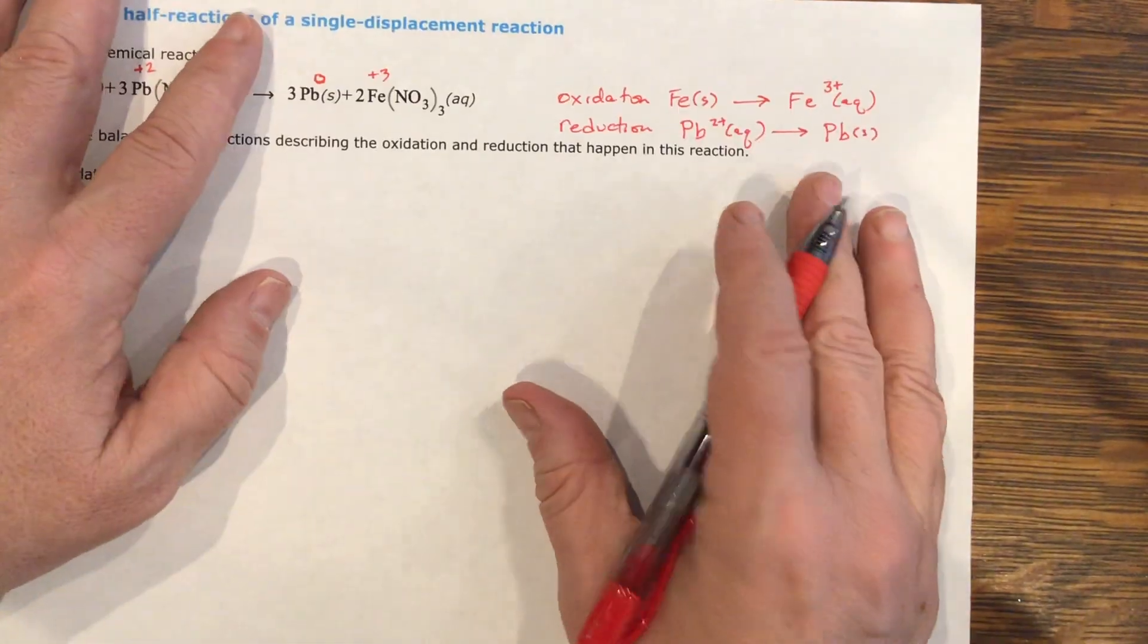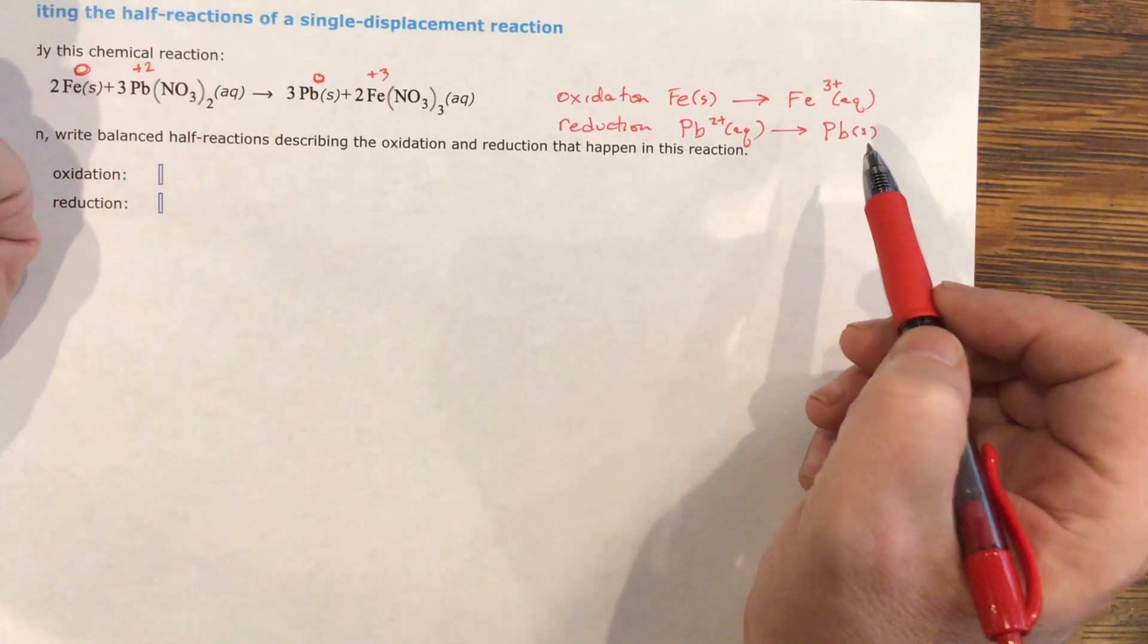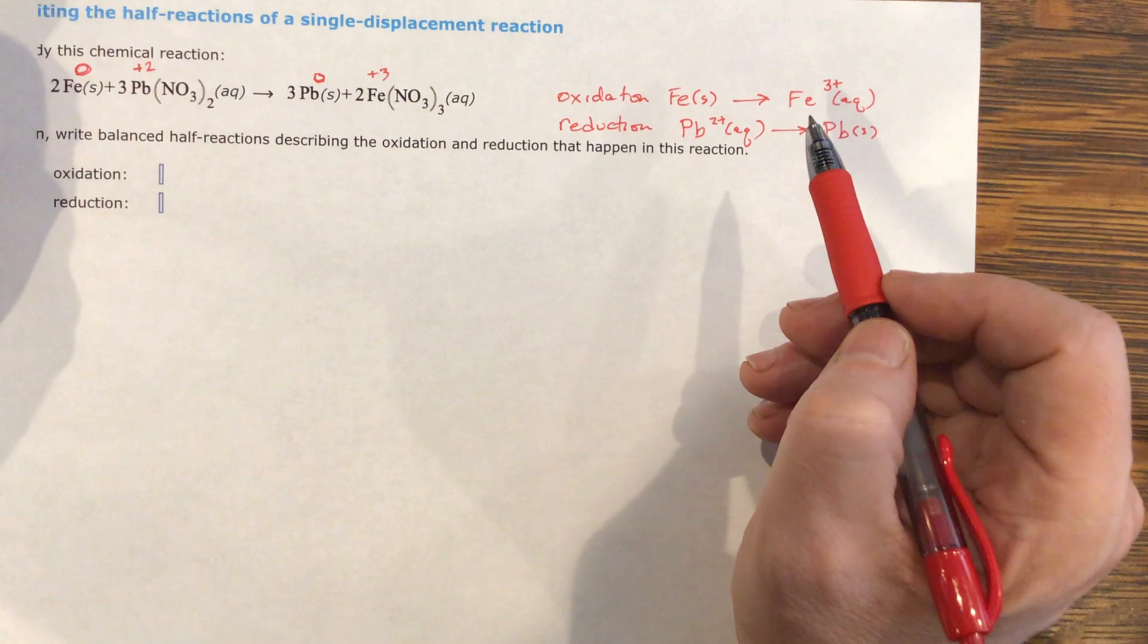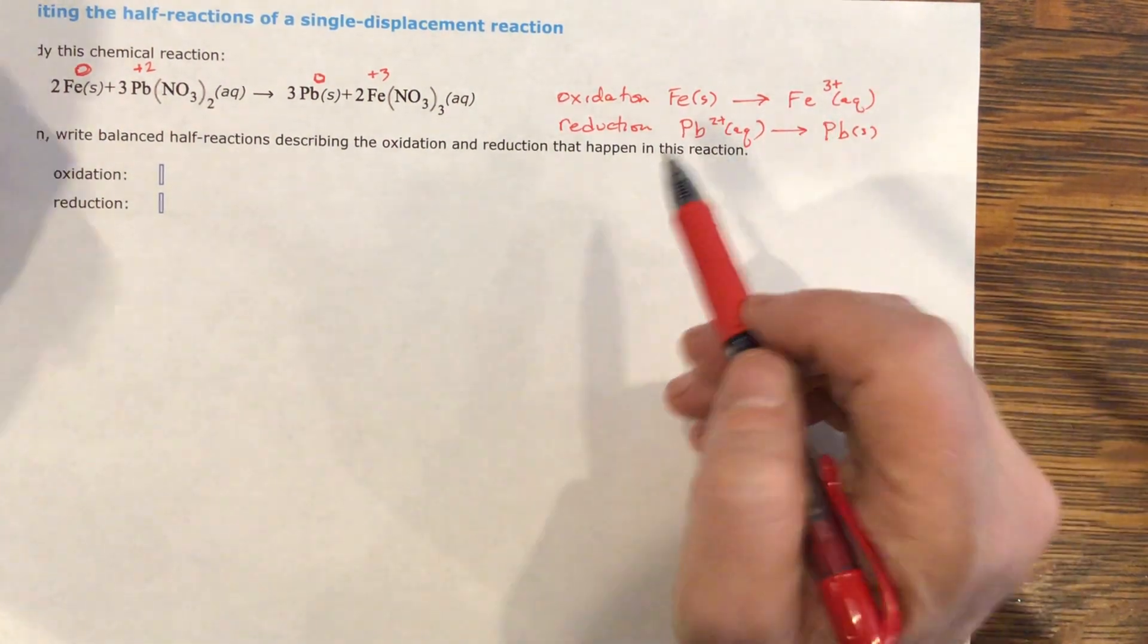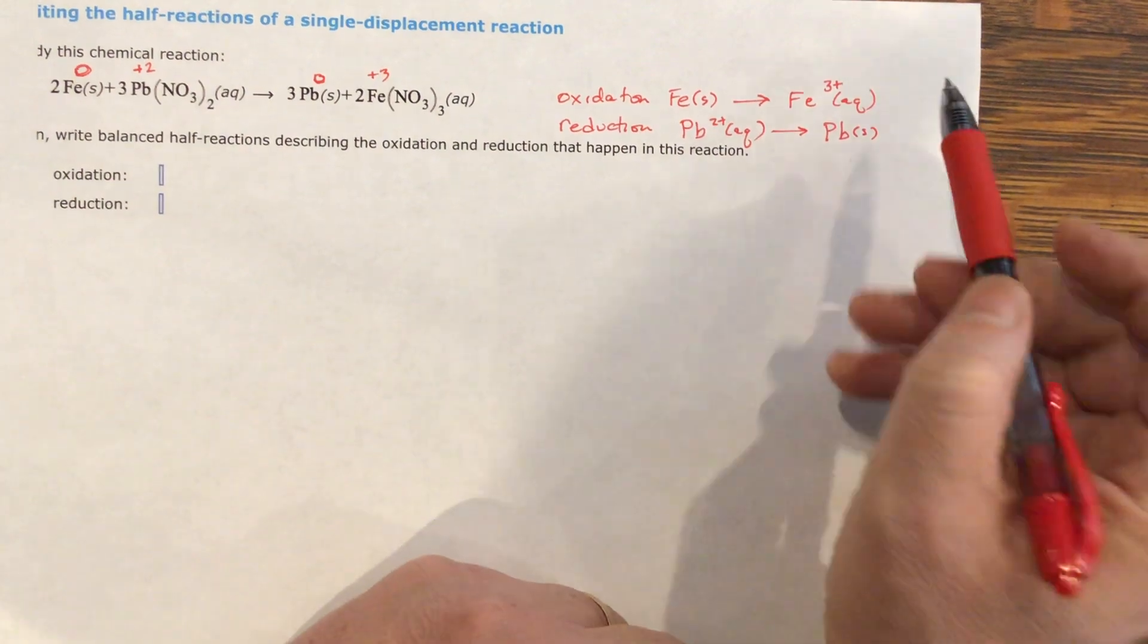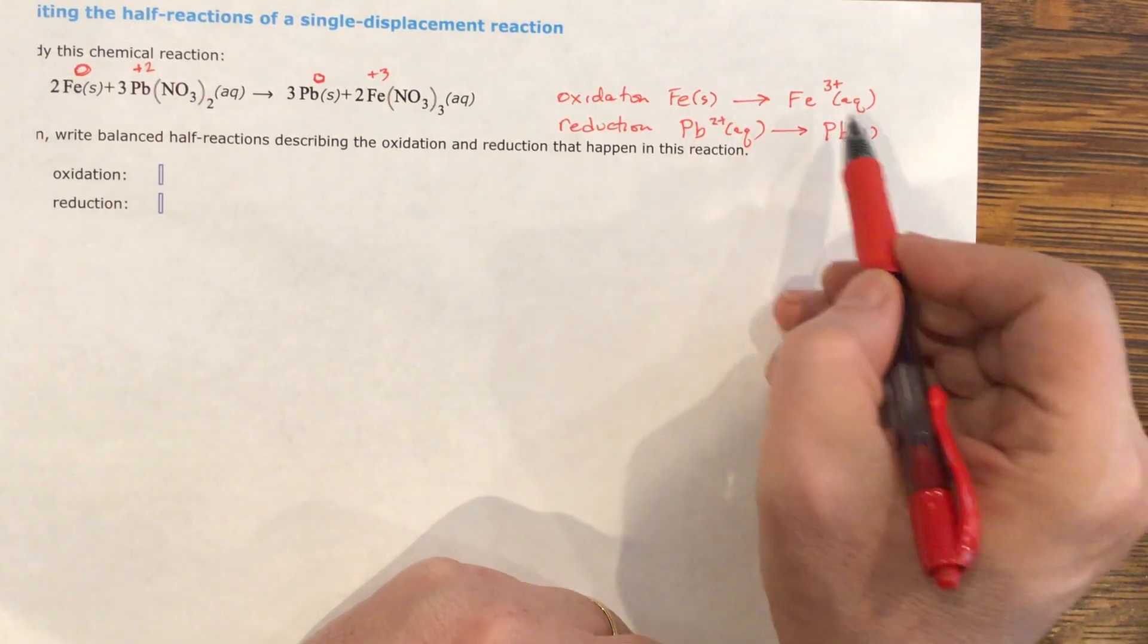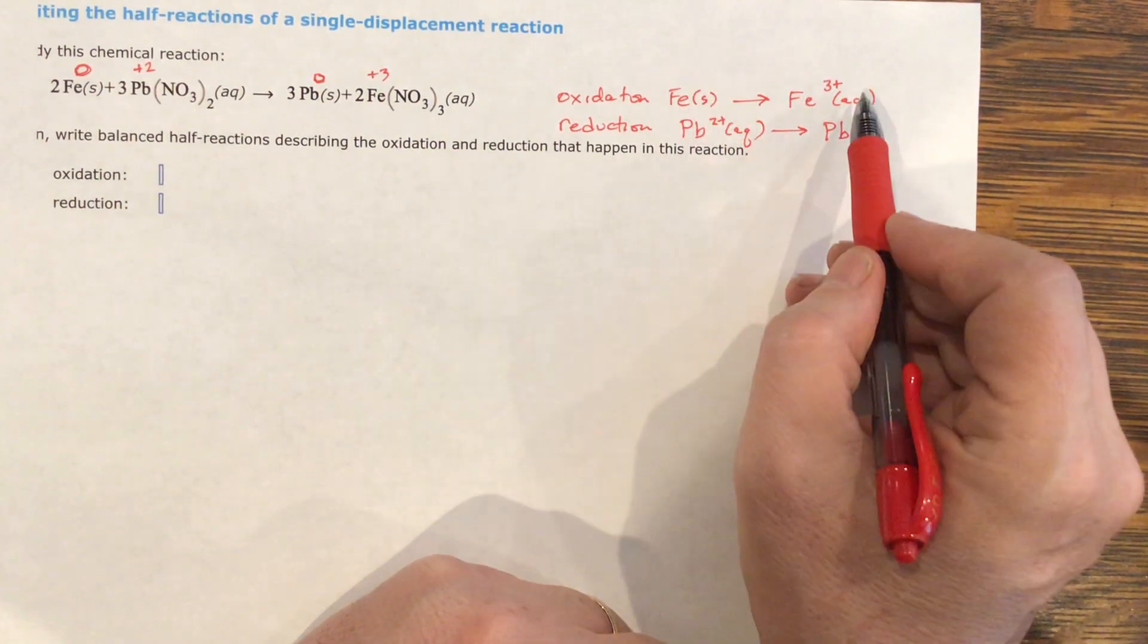Now we're almost finished. The only thing that needs to be added to this is where's the electron. How did I get from one to another? I either gave an electron away or I accept an electron. So where do I put the electron? This is zero. This is neutral. This is charged. So I need to add the electron to the side, which will cancel it.